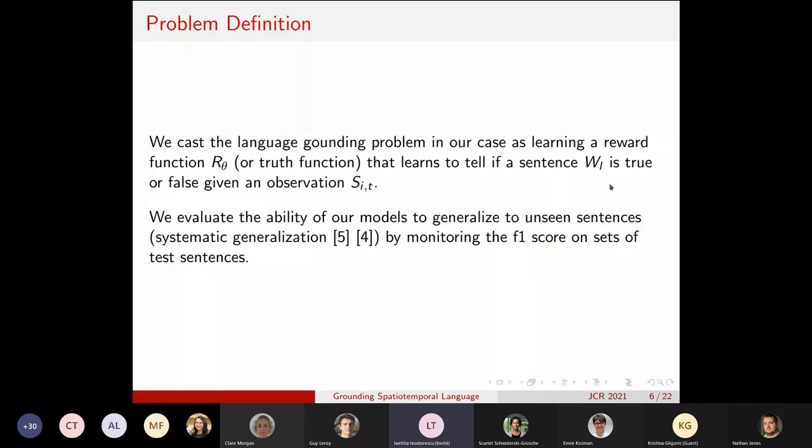Here the W_L, the L index, indexes the different words of the sentence, and each observation is an object vector which contains information about the shapes, the sizes, et cetera, of objects in the environment. The I index here indexes the different objects that exist in the environment, and the T here indexes the different time steps.